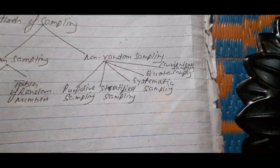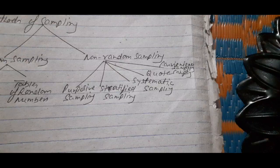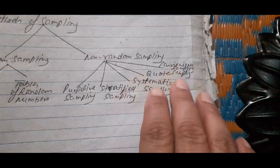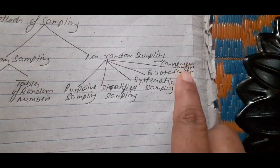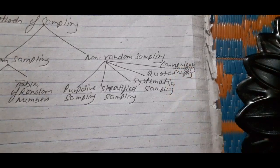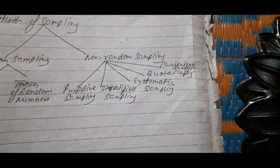In systematic sampling, units of the population are arranged numerically, geographically, or alphabetically, and every nth item of the numbered items is selected as a sample item. In quota sampling, the population is divided into different groups or classes according to different characteristics of the population. In convenience sampling, sampling is done by the investigator in a manner that suits his convenience — for example, an investigator may select a sample of teachers merely by referring to a college prospectus. This method is the simplest and least expensive but unscientific and unreliable, depending too much on the whims of enumerators.